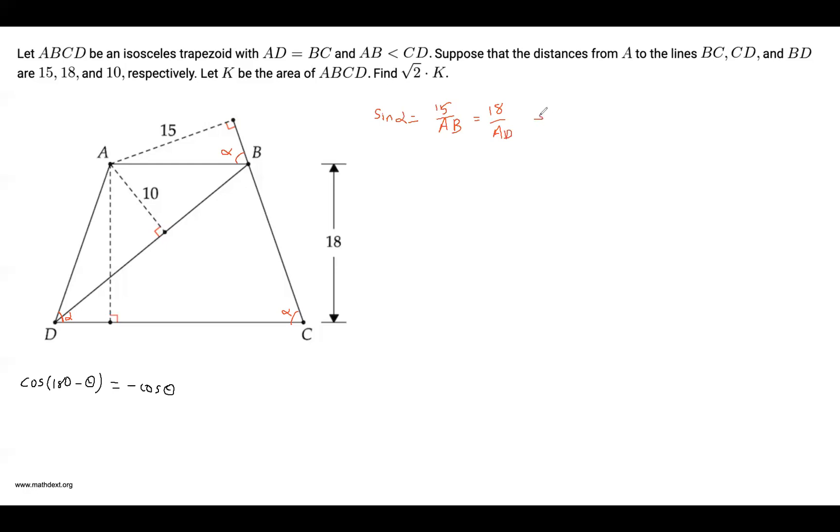And we get from this that 15 over 18, which is 5 over 6, is AB over AD. And note that AD is equal to BC.